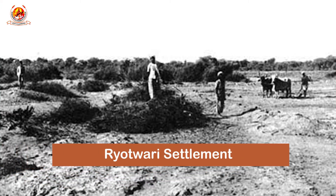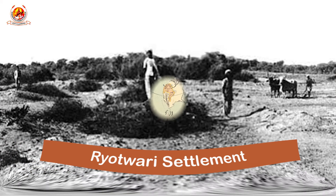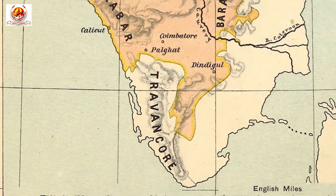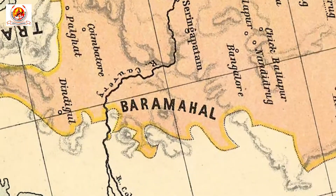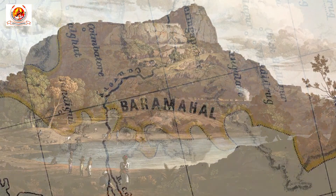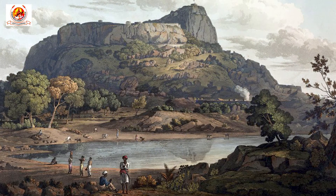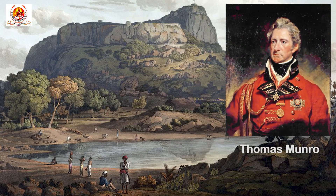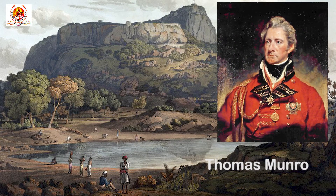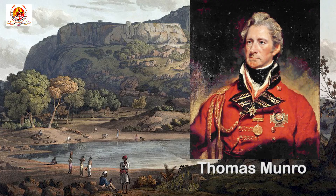Now let's discuss the Ryotwari Settlement. The Ryotwari experiment was started by Alexander Reed in Baramahal in 1792 and was continued by Thomas Munro from 1801 in the ceded districts of Madras. By 1820, during Lord Wellesley's time, it became the general feature of the company's land revenue policy.